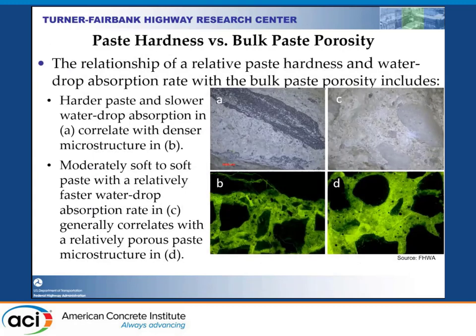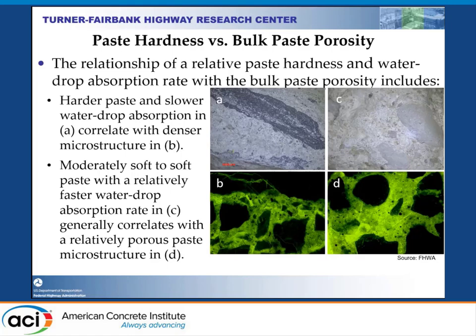Paste hardness versus bulk porosity: hardness is a simple scratch test of the paste, while paste porosity relates more to microstructure features. A harder paste and slower water drop absorption rate, as shown in the top-left fractured concrete surface image, correlates with a denser microstructure — in fluorescence mode, a denser area appears darker due to lesser capillary porosity. On the other hand, a moderately soft to soft paste with a relatively faster water drop absorption rate generally correlates to a relatively porous paste microstructure — the color is brighter, a function of more capillary porosity.